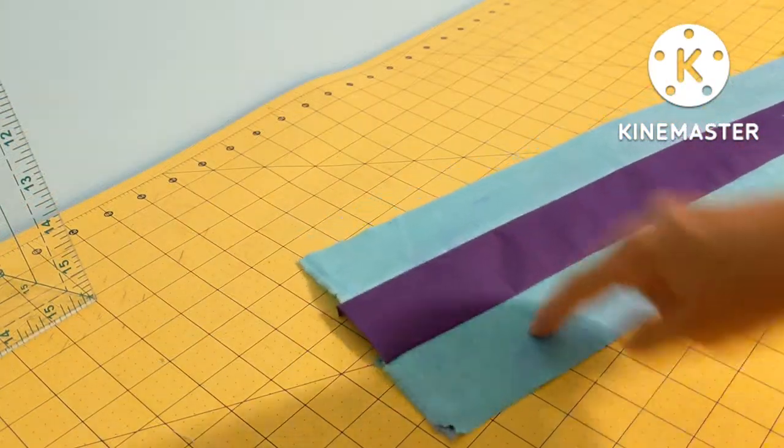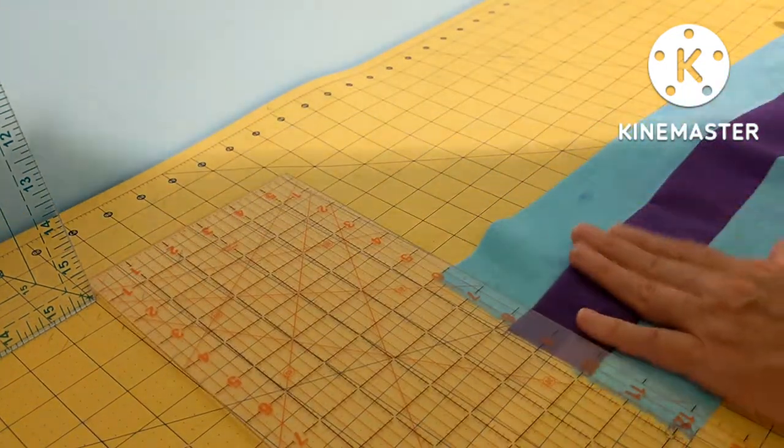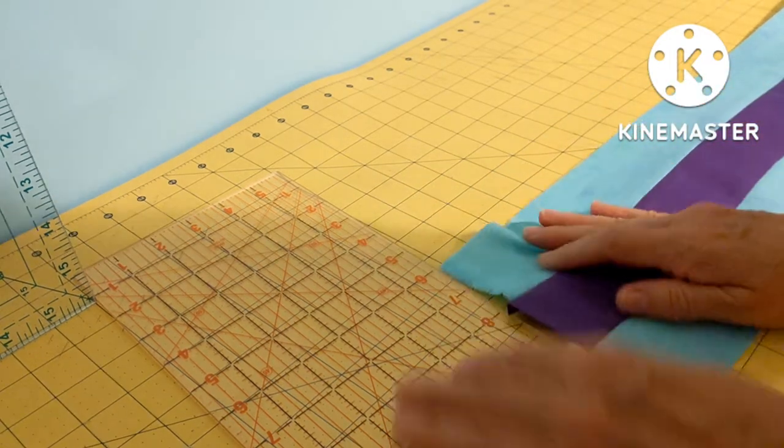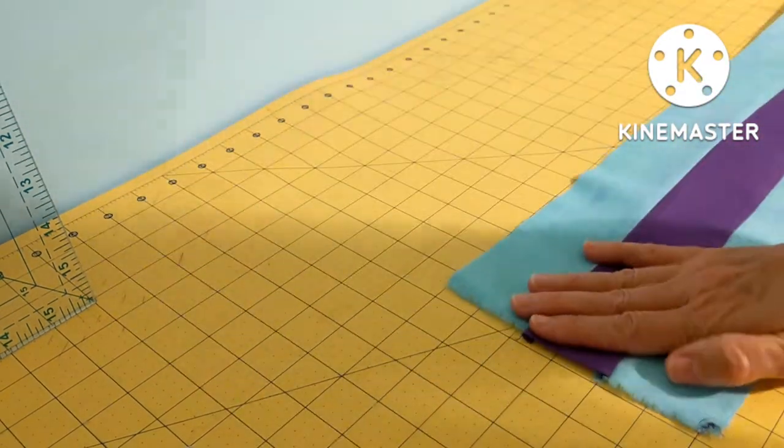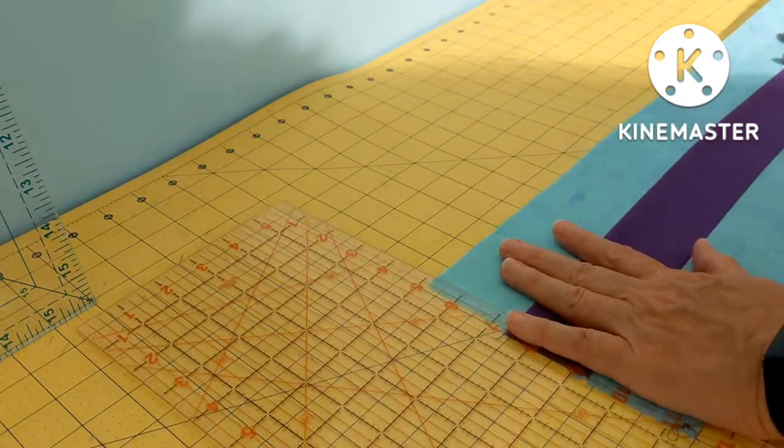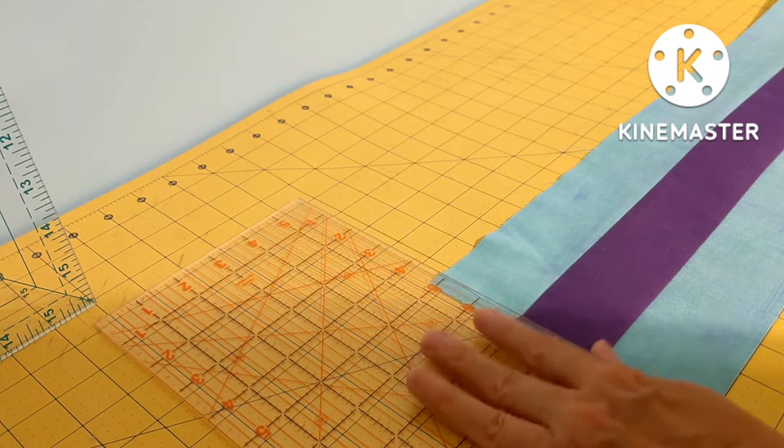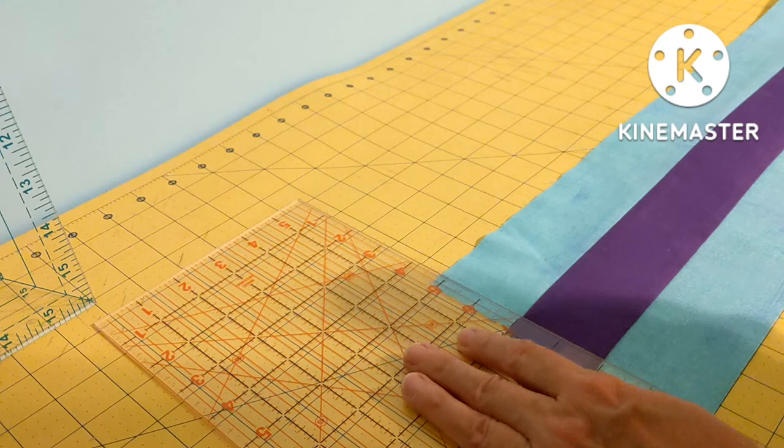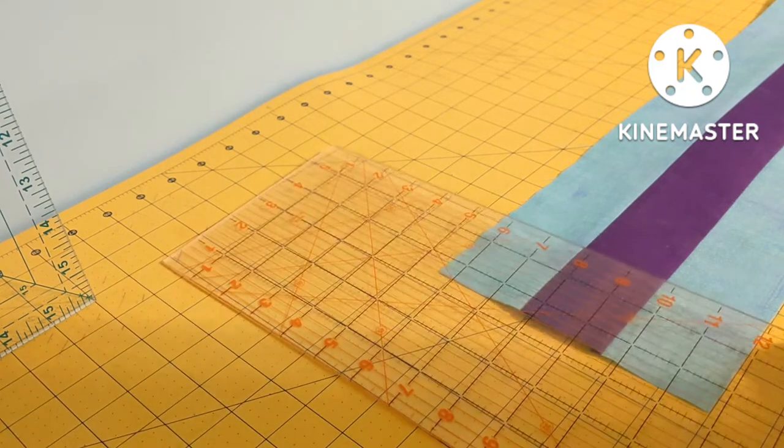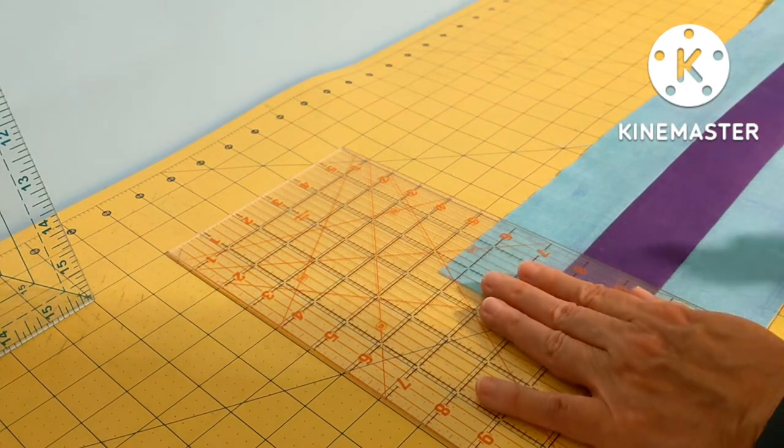This is going to be our outer corners and we are going to cut this strip into two and a half inch pieces. I have pressed to the purple to the inside on this one. So I'm just going to line that up. Take off a little smidgen of the selvedge and then two and a half inches wide.